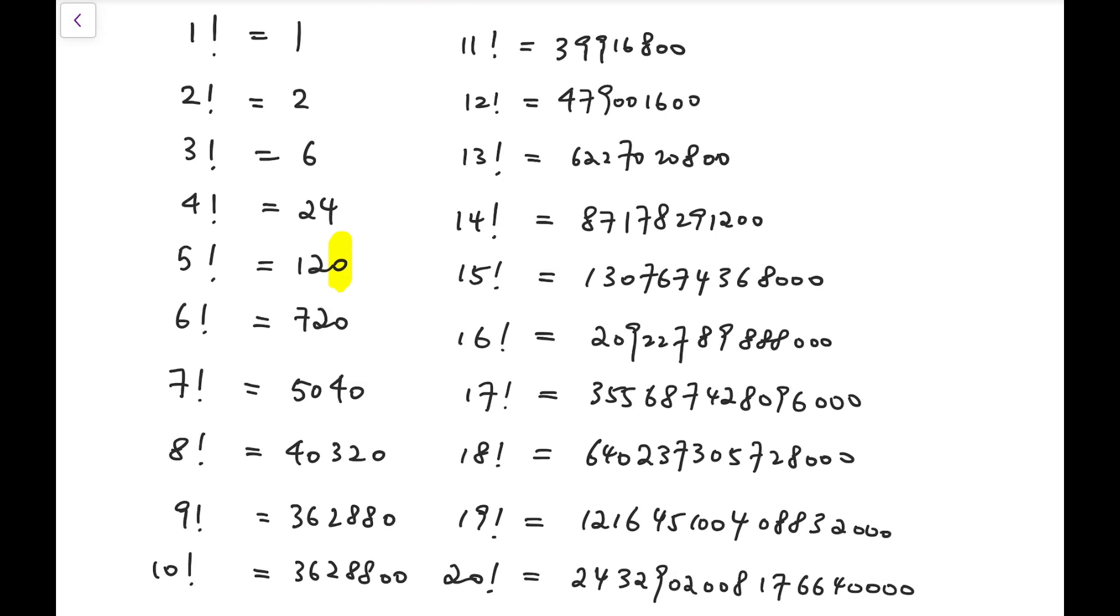And then the next time I get an extra zero is when we multiply up to 10 factorial, which has two zeros at the end. Then I need to wait until 15 factorial when I get the third ending zero digit. And then the next one will be at 20 factorial, with four ending zero digits.